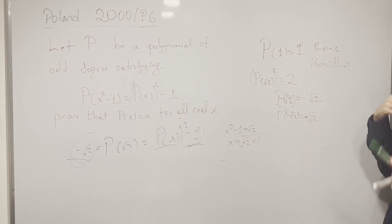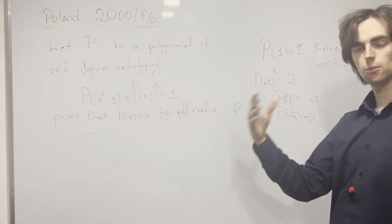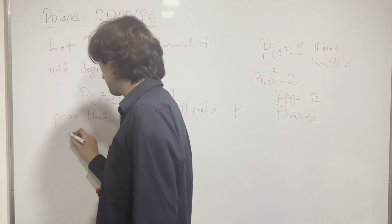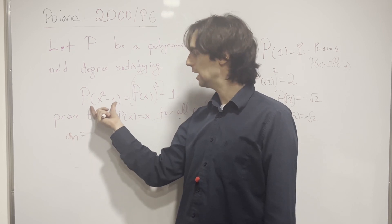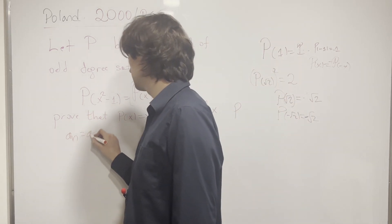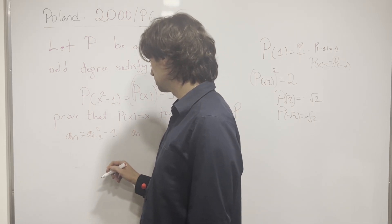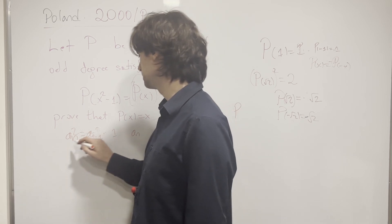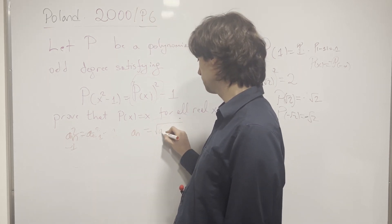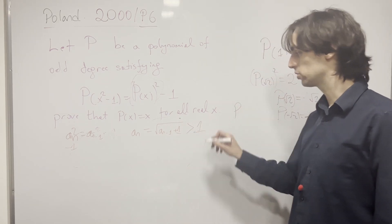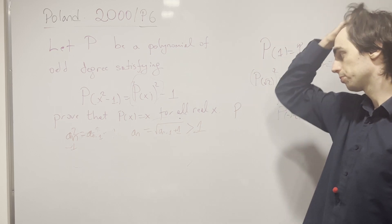Now I invite you to pause for about 15 minutes and try to push the problem further. Here's the next step: let's talk about a sequence. Let a_n be such that a_n squared minus 1 equals a_{n-1}. In other words, a_n equals the square root of a_{n-1} plus 1, which is greater than 1, once we're above 1 at some point.